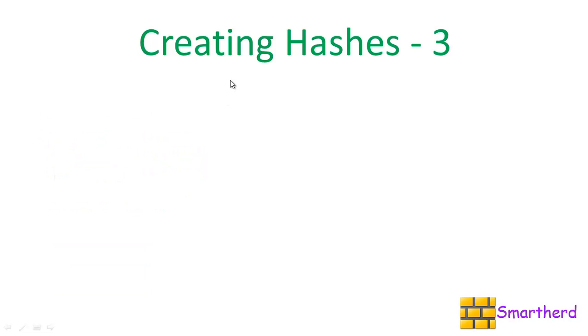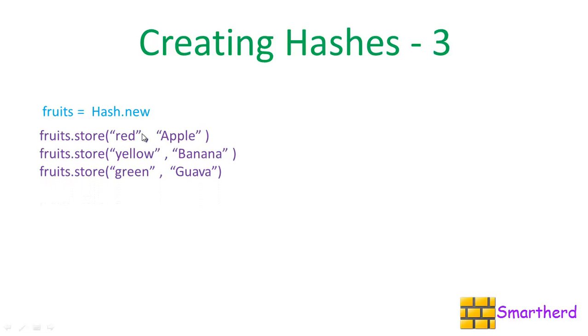Let's see our third way to create a hash. In this case also, we just have to write fruits equal to hash.new. But here, we are using the store function fruits dot store red comma apple. This store method contains two parameters. The first parameter is the key and the second parameter automatically gets converted into the value.